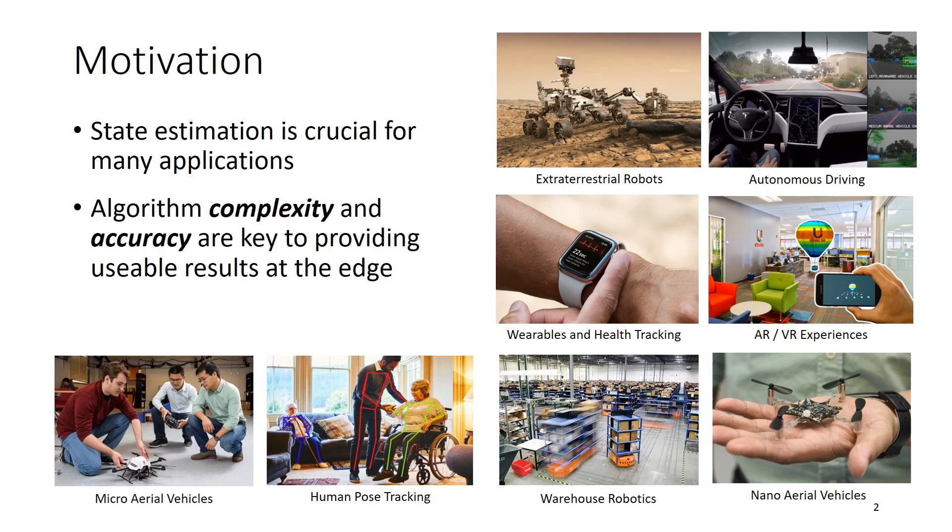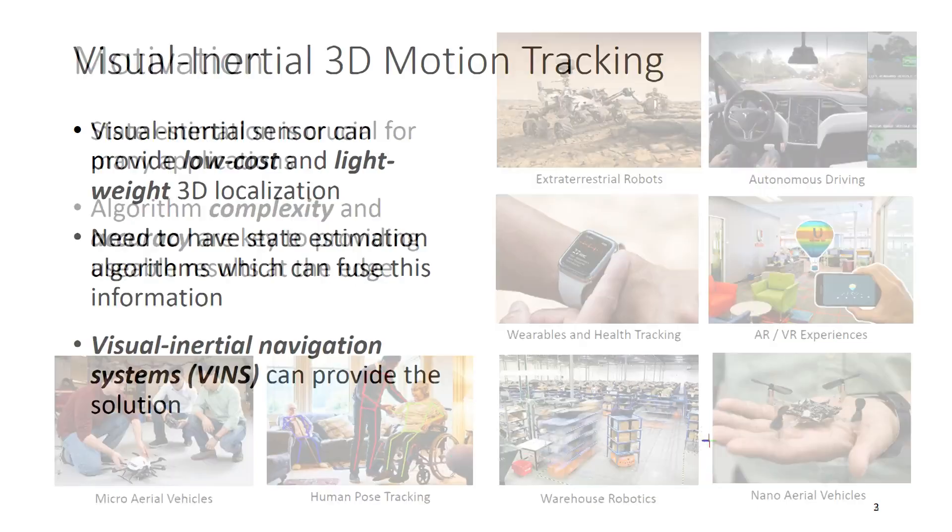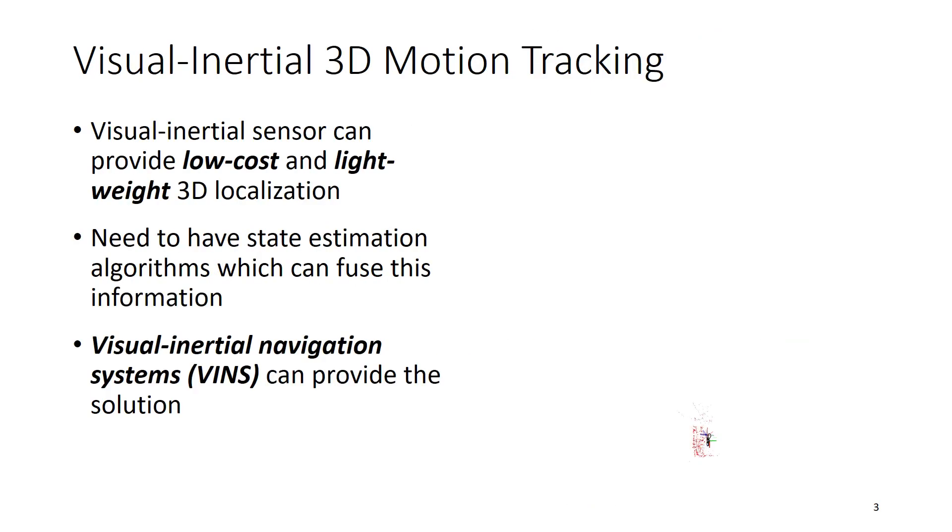State estimation is crucial for a wide range of different applications, and the key to deploying on all these different applications is the algorithmic complexity and the final accuracy of the pose estimate. Visual inertial sensors can provide a very low cost and lightweight 3D localization solution. We need to develop state estimation algorithms which can efficiently fuse this information together, and this class of algorithms is generally termed visual inertial navigation systems.